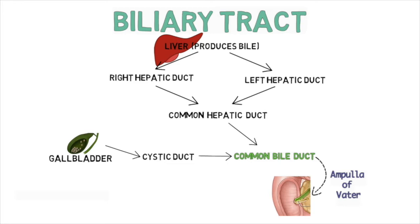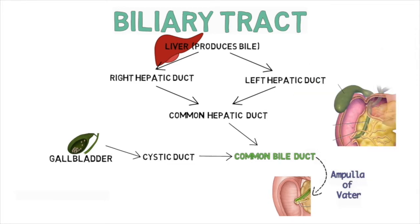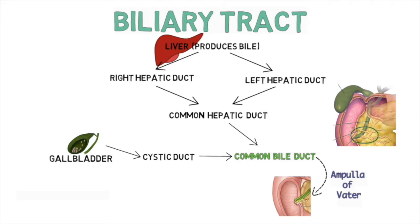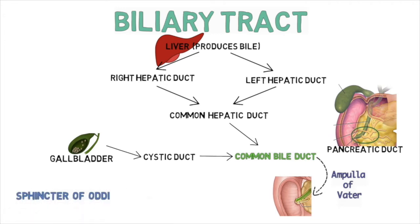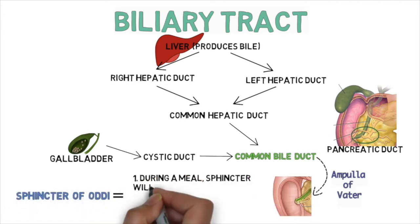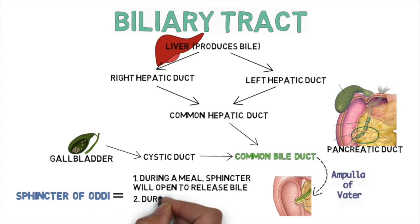About one centimeter from where the common bile duct meets the duodenum, the pancreas empties into the biliary system via the pancreatic duct. The secretion of bile and pancreatic juices is controlled by the sphincter of Oddi. During meals, the sphincter of Oddi opens to release bile from the liver, and the gallbladder contracts to push stored bile out. During fasting, it closes and bile made by the liver is shifted into the gallbladder for storage.